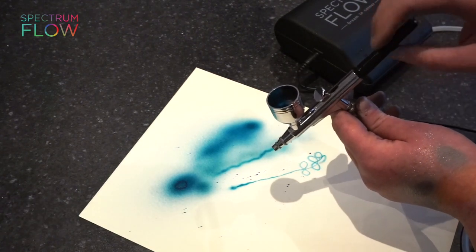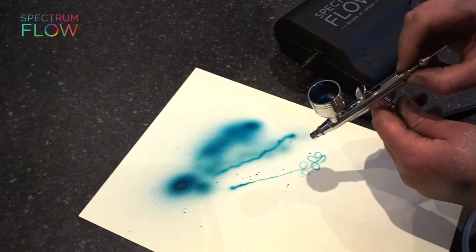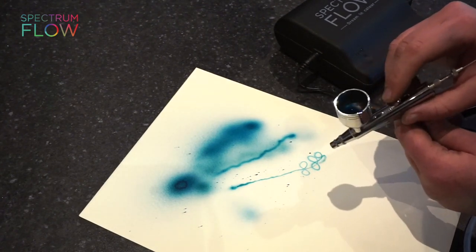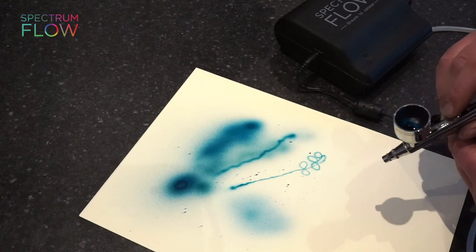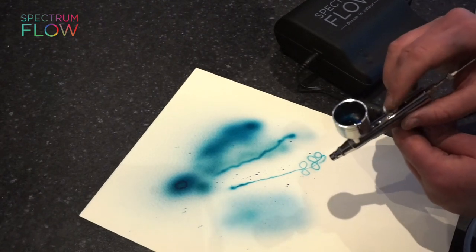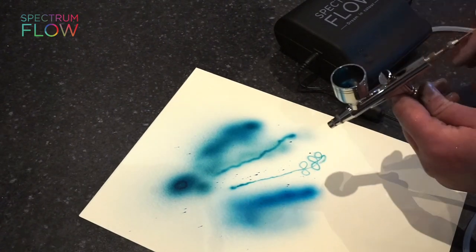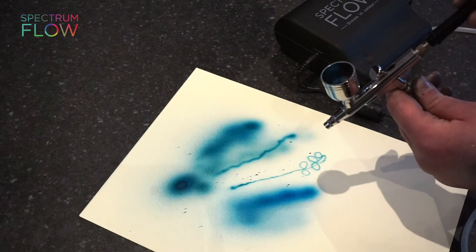And then lastly, if you open this up, there's this little section here. You can turn that to tighten it and it makes the color come out really light so you can get a better flow. Or you can loosen it up and it comes out a bit faster. So a lot of things there to help you play with to get some cool effects.